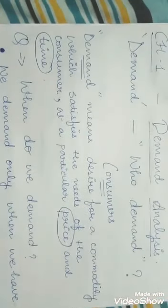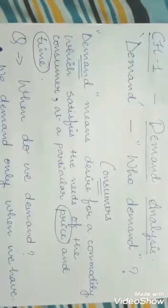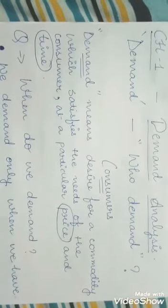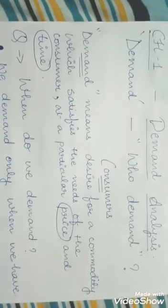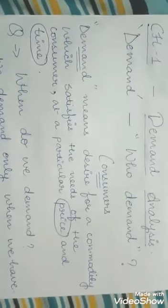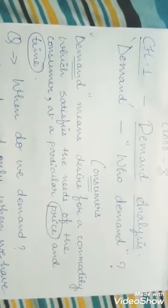So in the term demand, when we have desire for a commodity, then only we start demanding. But with that, two things are very important: time and price. When these two things are in our hand, the demand completes itself. So demand is a desire for a commodity which satisfies our want, but for that we need price and time.